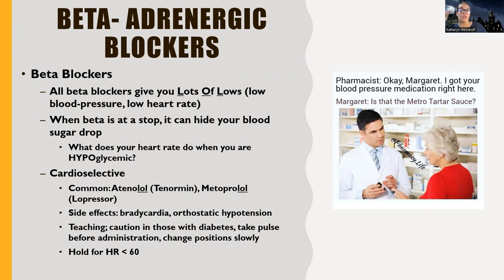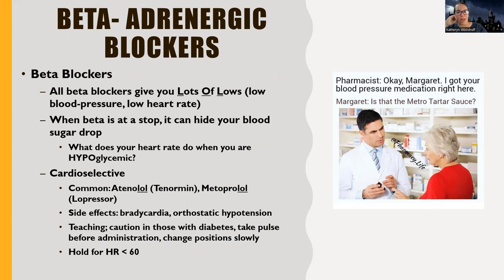For beta blockers, we check both blood pressure and heart rate before giving — hold if the heart rate is less than 60. For diabetic patients on beta blockers, watch blood sugar closely. Beta blockers can lower blood glucose, but more importantly they mask the signs of hypoglycemia. Normally, when blood glucose gets low, the body activates fight-or-flight — racing heart, sweating, diaphoresis — warning the patient their sugar is low.